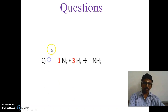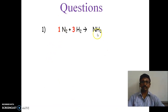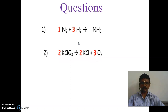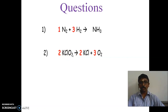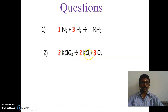We discussed the first question in the last class. Now we can see the second question: 2 KClO3. KClO3 - K means potassium, ClO3 means chlorate. So potassium chlorate gives 2 molecules of KCl - potassium chloride - plus 3 molecules of oxygen O2.